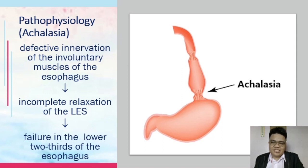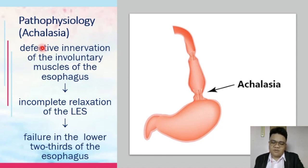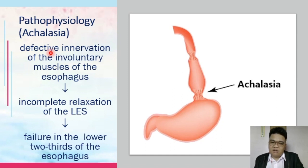For the pathophysiology of achalasia, this is attributed to the defective innervation of your involuntary muscles of the esophagus. As you may recall from anatomy, your LES is innervated by your sympathetic and parasympathetic nervous system. In this case, there is defective control of your muscles of the esophagus, resulting in incomplete relaxation of the LES — or failure of the LES to open when it needs to be open. Hence, there is failure also in the lower two-thirds of the esophagus.